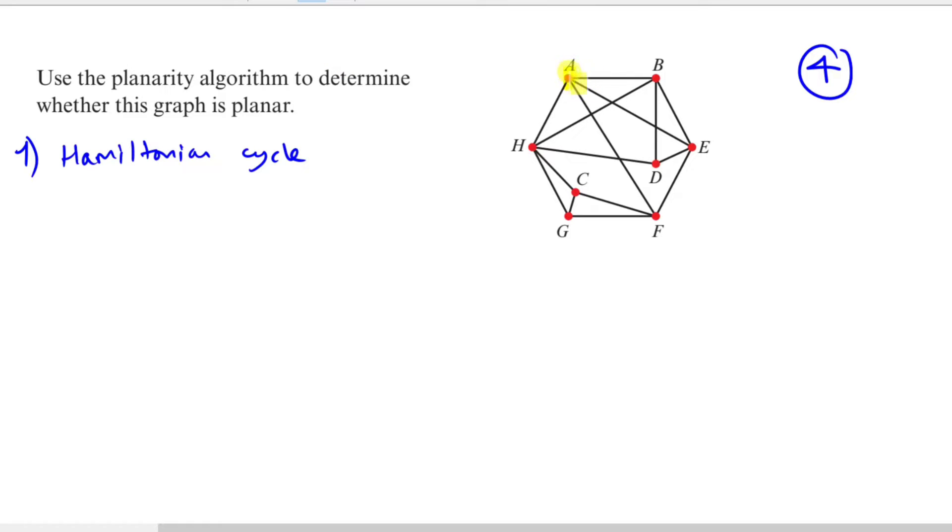So start from A, return to A, and this is how we could do it. You go from A to B, then B to D, then D to E, E to F to C to G to H and finally A. Voila guys, this is a Hamiltonian cycle and this is exactly what we need for the next few steps.